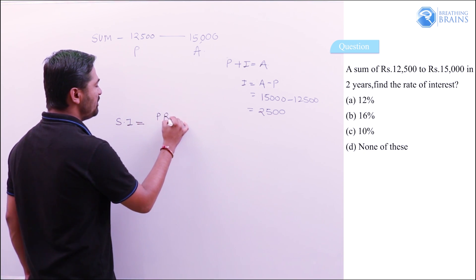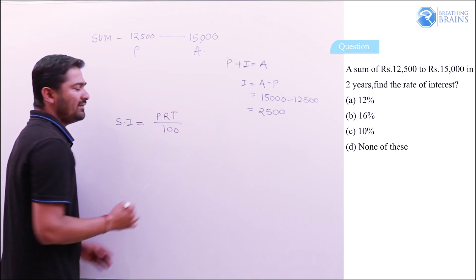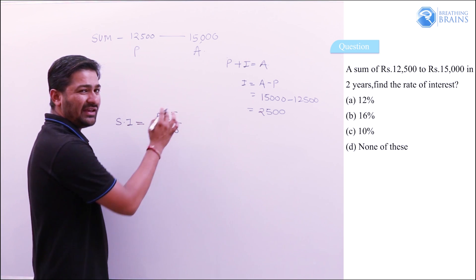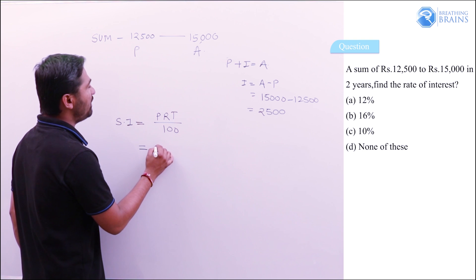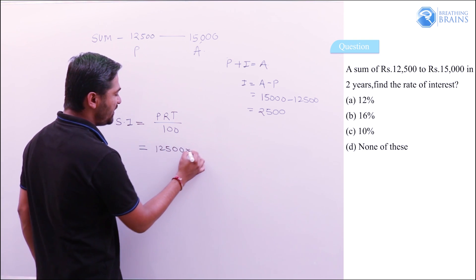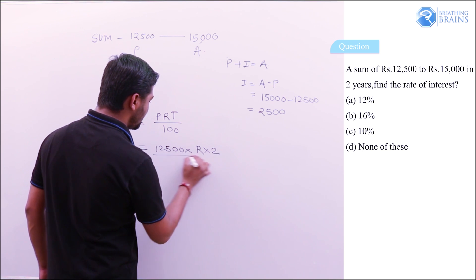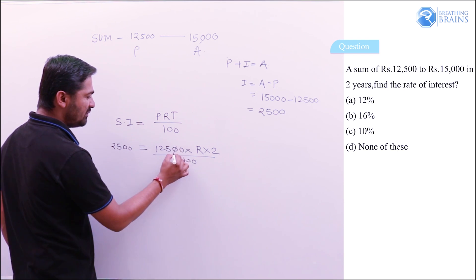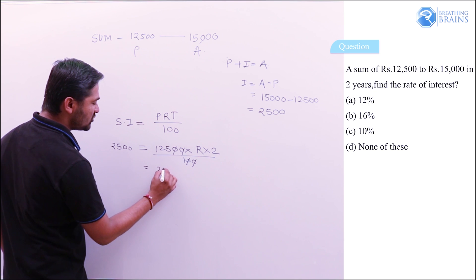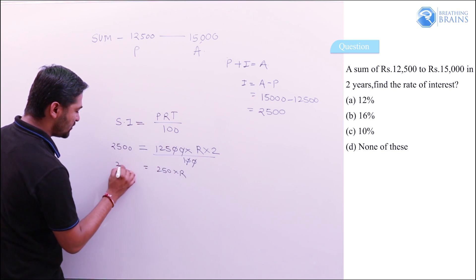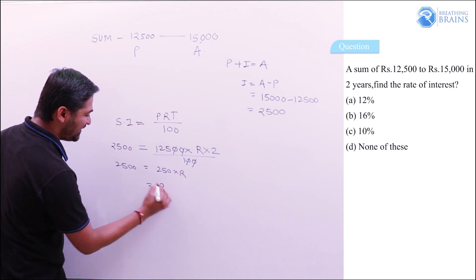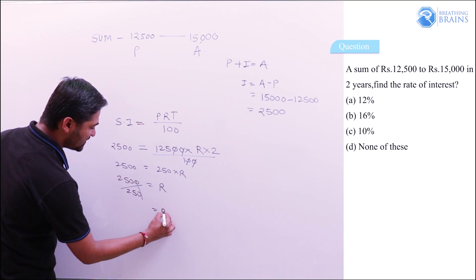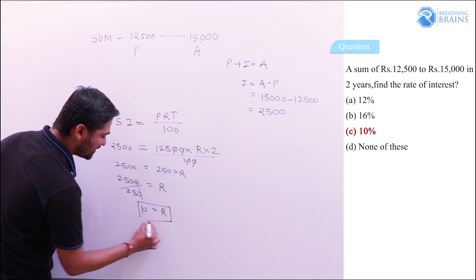The simple interest formula is SI = (P × R × T) / 100, where P is principal, R is rate of interest percent per annum, and T is time in years. So: 2,500 = (12,500 × R × 2) / 100. Cancelling zeros, it becomes 250R = 2,500, so R = 2,500 / 250 = 10%.